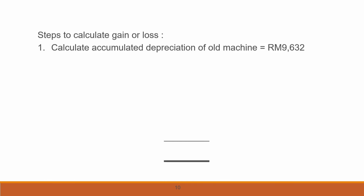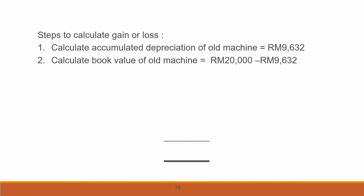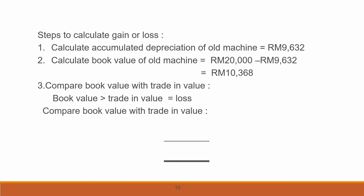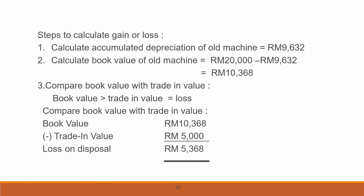Now we calculate the gain or loss. Accumulated depreciation of the old machine is RM9,632, and the book value is RM10,368. Comparing book value with trade-in value: book value RM10,368 is bigger than trade-in value RM5,000, so we get a loss on disposal. Loss on disposal = RM10,368 − RM5,000 = RM5,368.